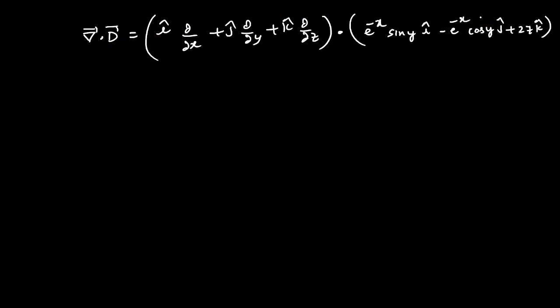I hope you're familiar with dot product rules. Taking the components and simplifying, we have ∂/∂x of e^-x sin y minus ∂/∂y of e^-x cos y plus ∂/∂z of 2z. Those who know partial derivatives: when using derivative with respect to x, you treat every other variable as constant except x.